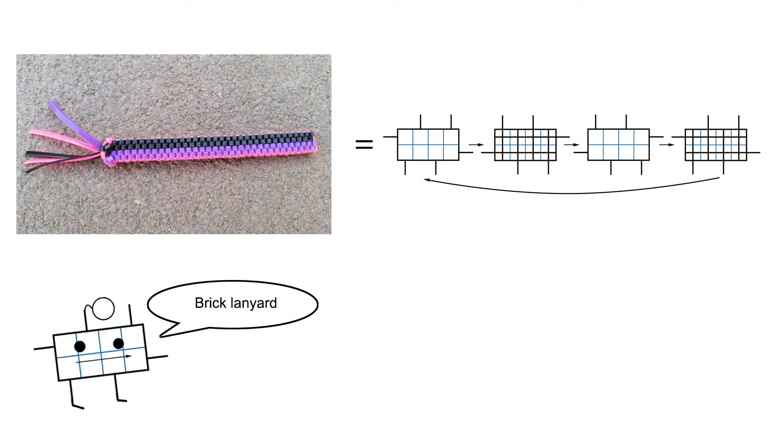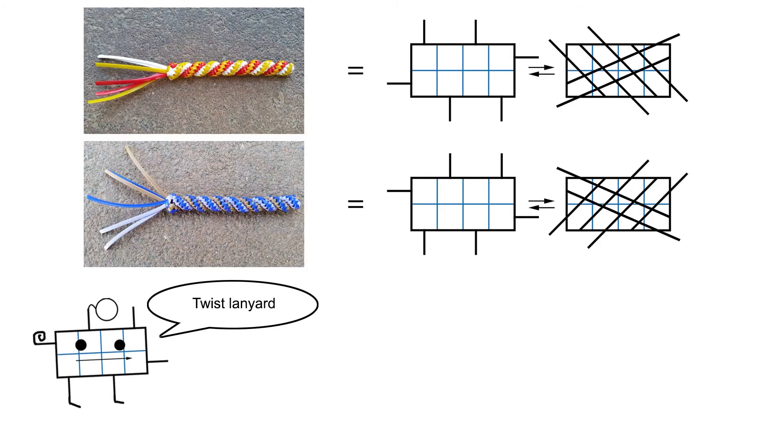when people say brick lanyard, they mean the alternation between the two brick stitches. And when they say twist lanyard,